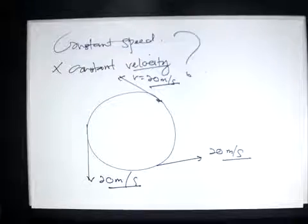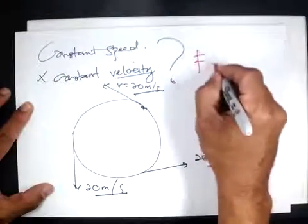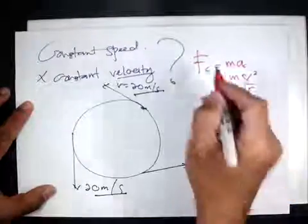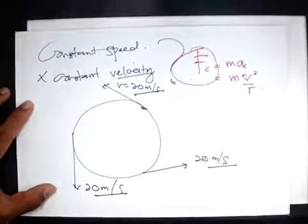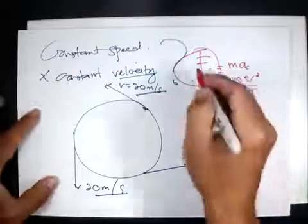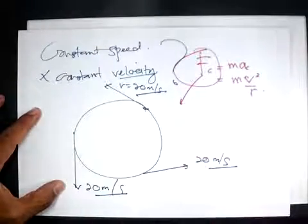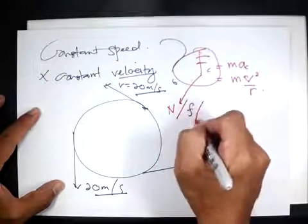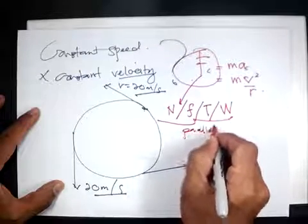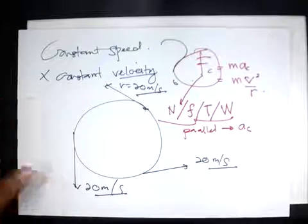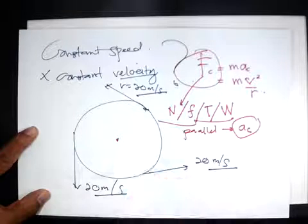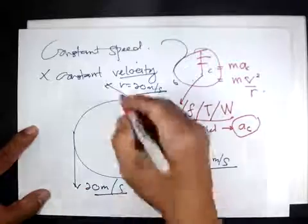That's what we say: change in velocity but constant in speed. From here we have FC equal to M AC equal to M V square over R.